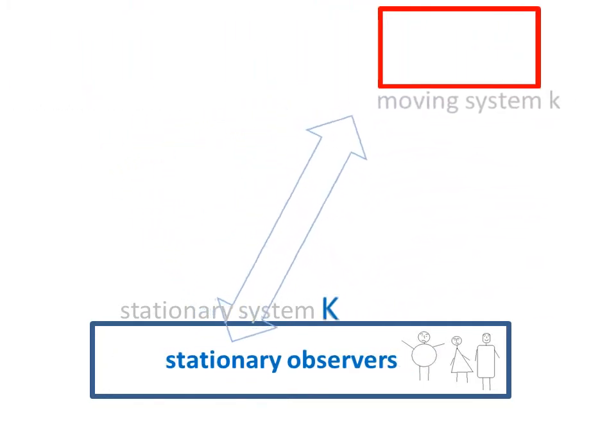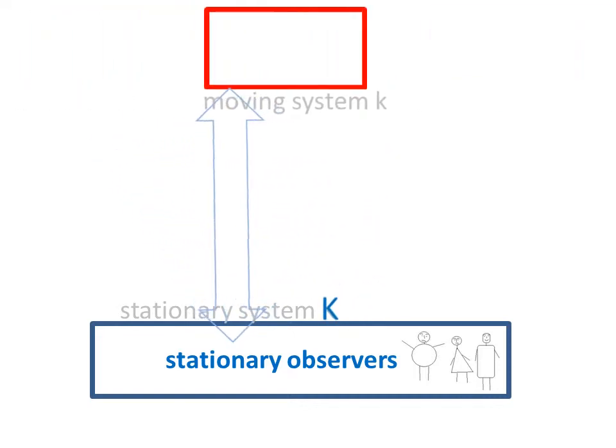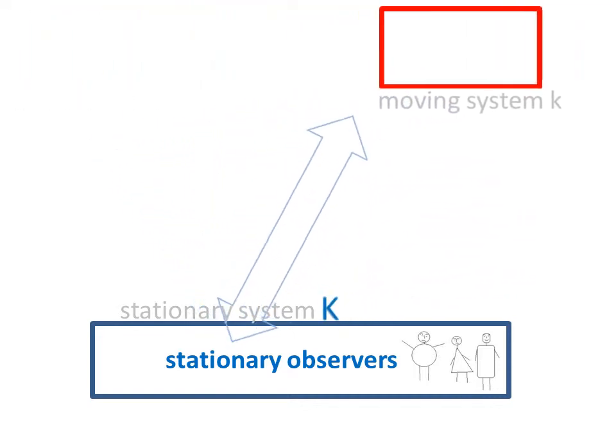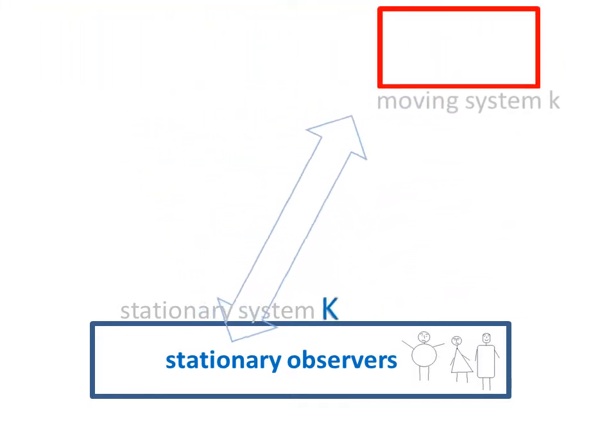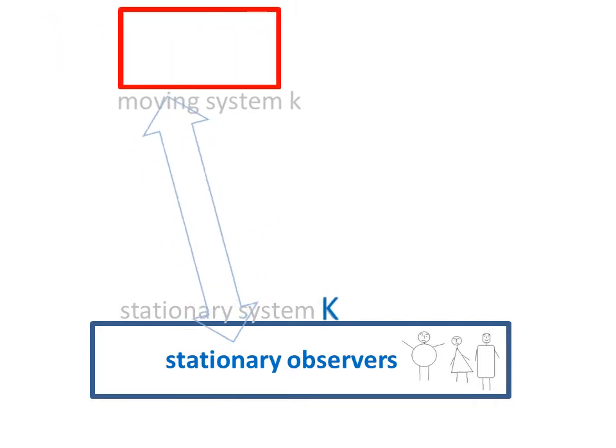Observers in stationary system, capital K, cannot carry out direct measurements in moving system, lowercase k. They can only speculate about the following two things.